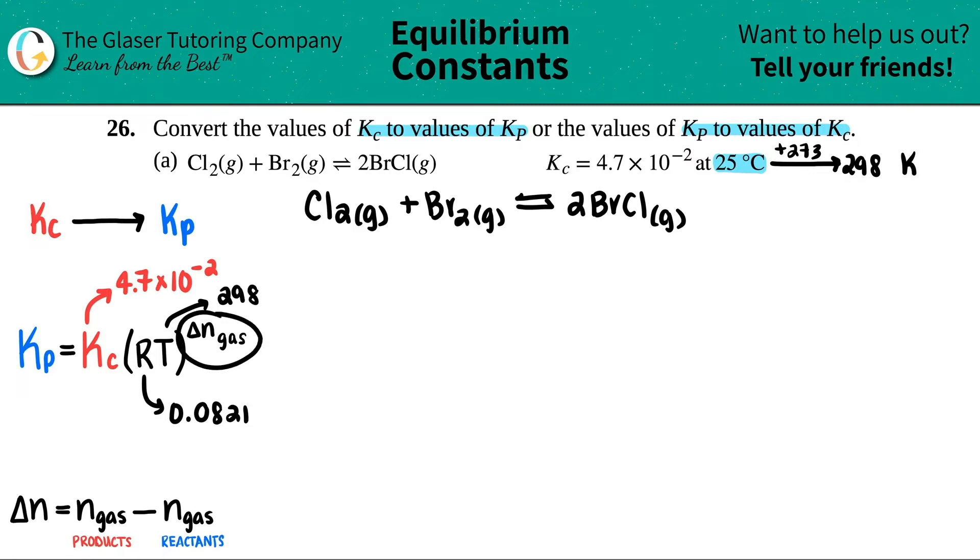Now here comes something new, delta n gas. I wrote down what the delta n was. Remember, delta, which we've seen in delta T values in chapter 5, the thermochemistry chapter, is just a change. In this case, the change is products minus reactants. N stands for moles. So I have to find out how many moles of gas of the product I have, find out how many moles of gas of the reactant I have, and then I just subtract the two.